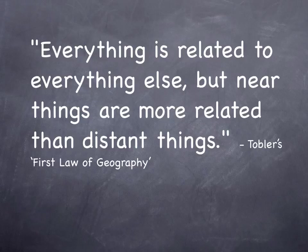We often talk about origin-destination pairs. Geographer Waldo Tobler posited the first law of geography, which says that everything is related to everything else, but near things are more related than distant things. The implication is that you are more likely to make a short trip than a long trip, all other things being equal.